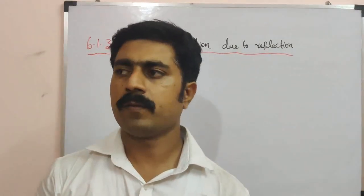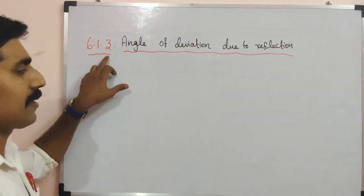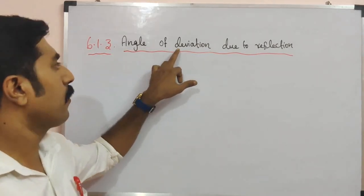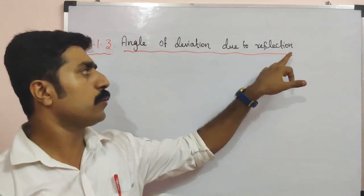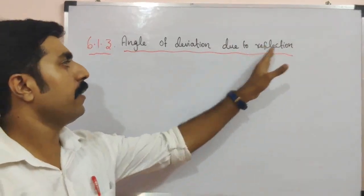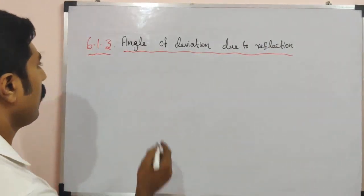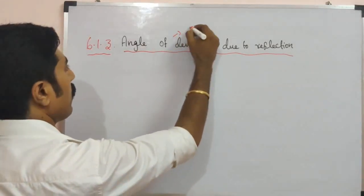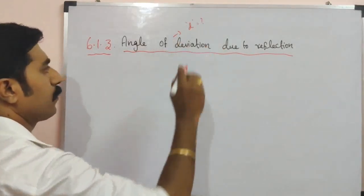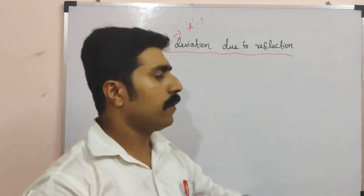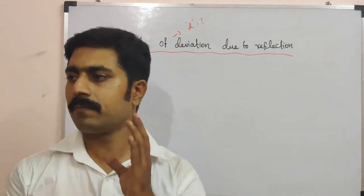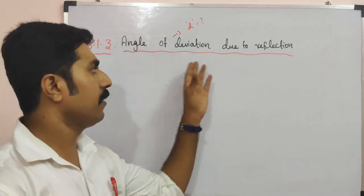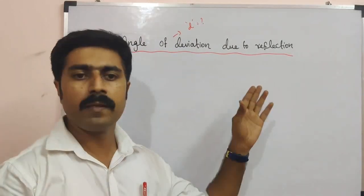Hi students, today's topic is lesson 6, topic number 6.1.3 — angle of deviation due to reflection. Angle of deviation is denoted by the letter small d. The simplest method to produce a deviated ray is by reflection.